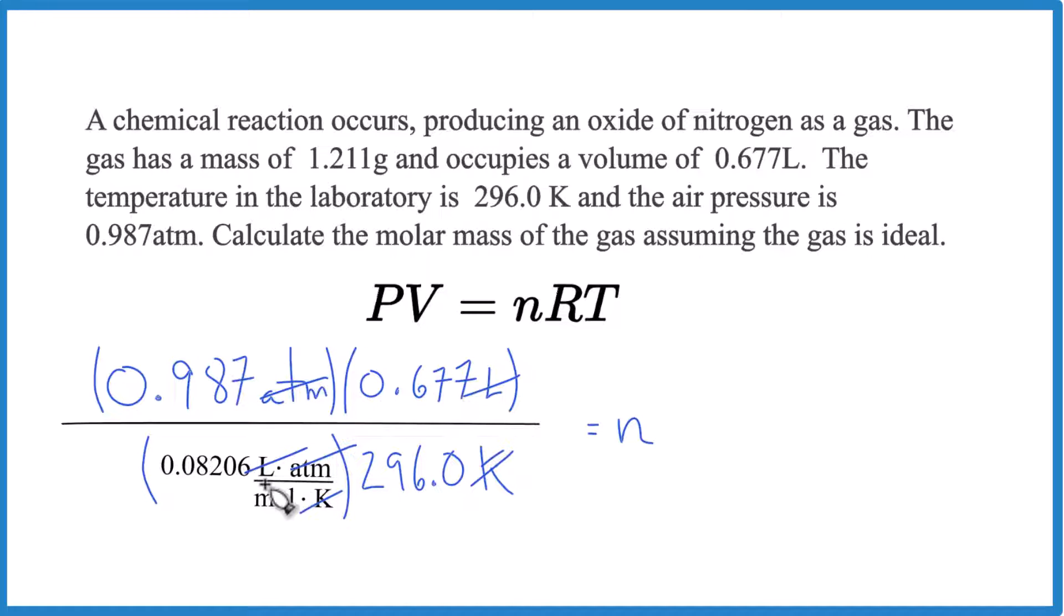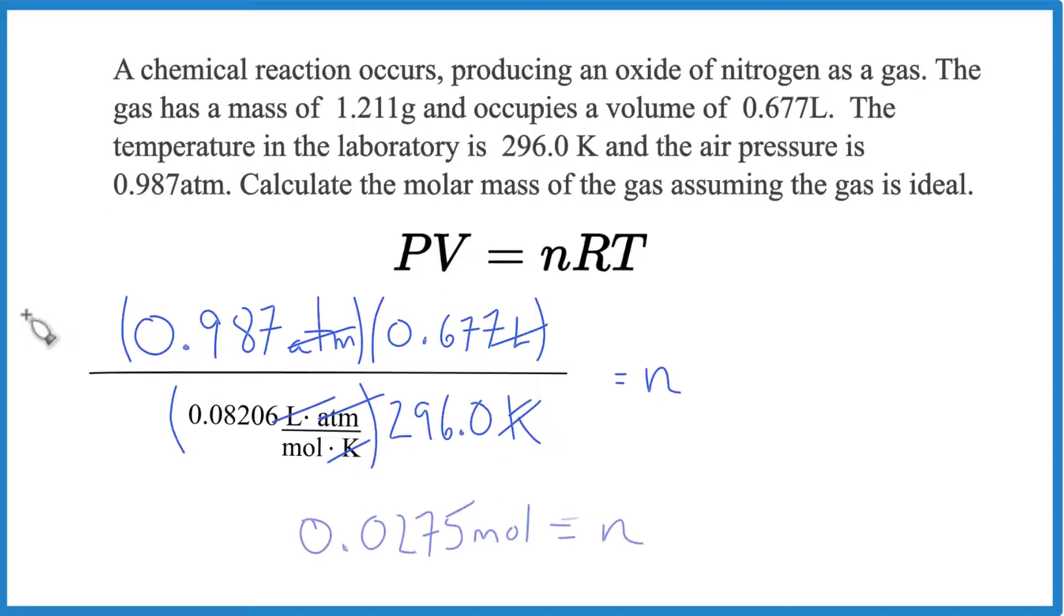So we multiply these two numbers, then these two numbers, then divide the numerator by the denominator, and we'll have our moles. When we do that, we end up with... So now we have our moles here.